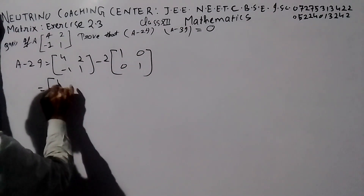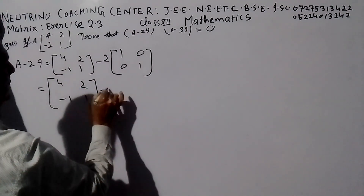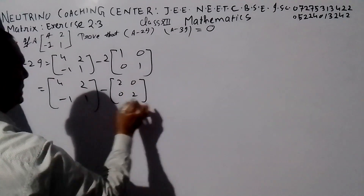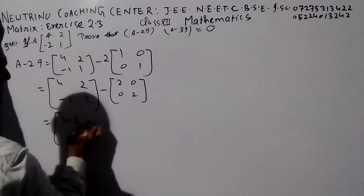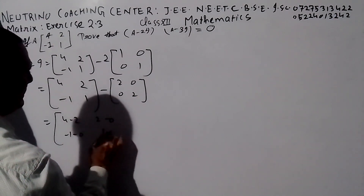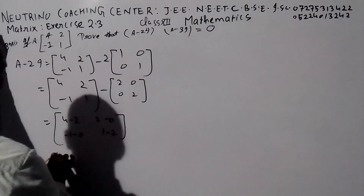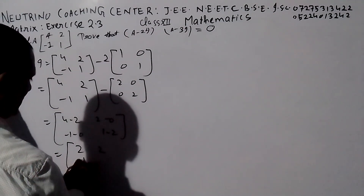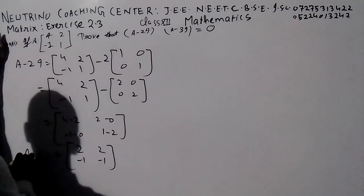This point is 4, 2, minus one, one. And here we have two, zero, zero, two. Subtraction: 4 minus two, 2 minus zero, minus one minus zero, one minus two. And here we have two, two, minus one.